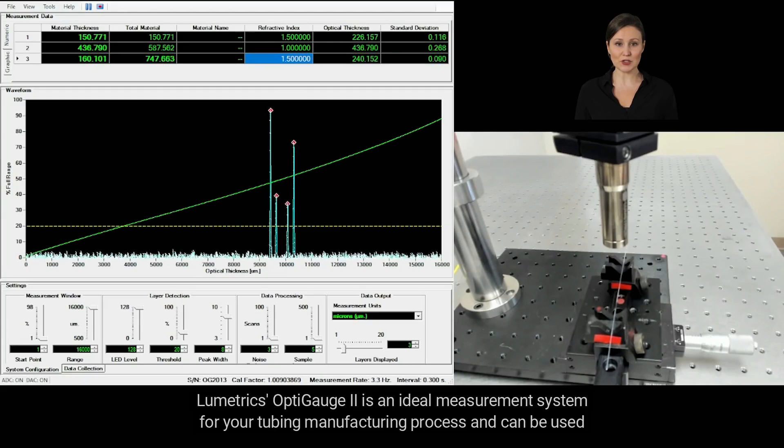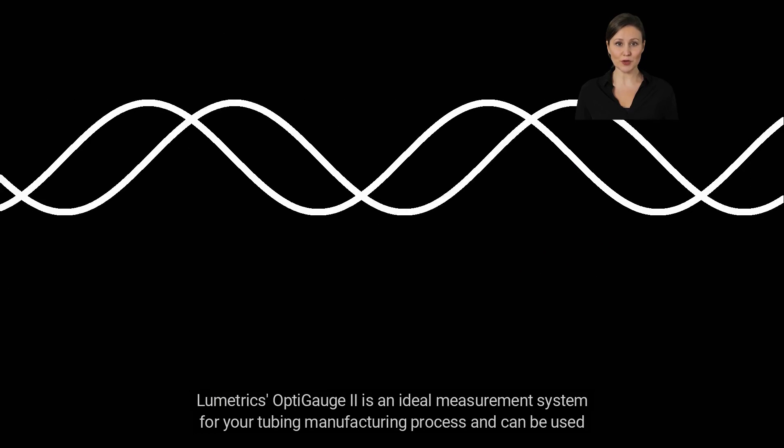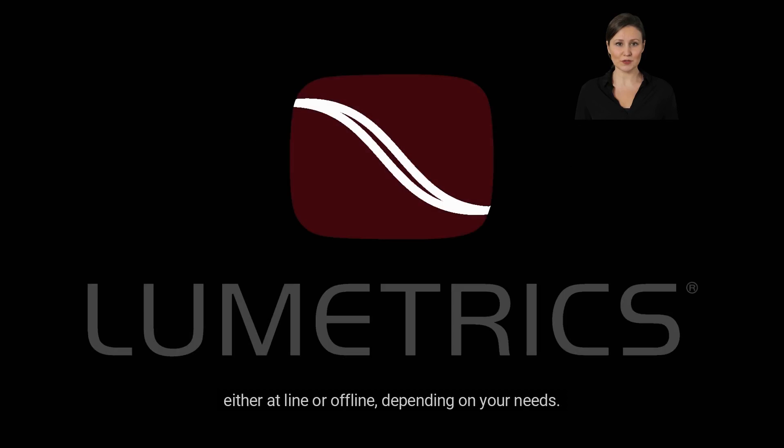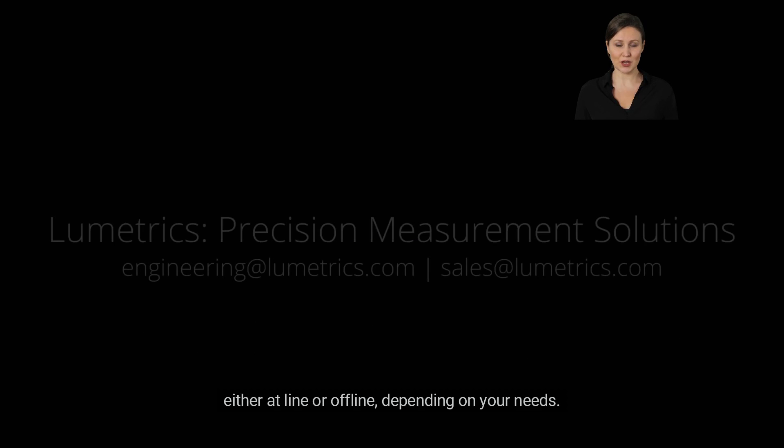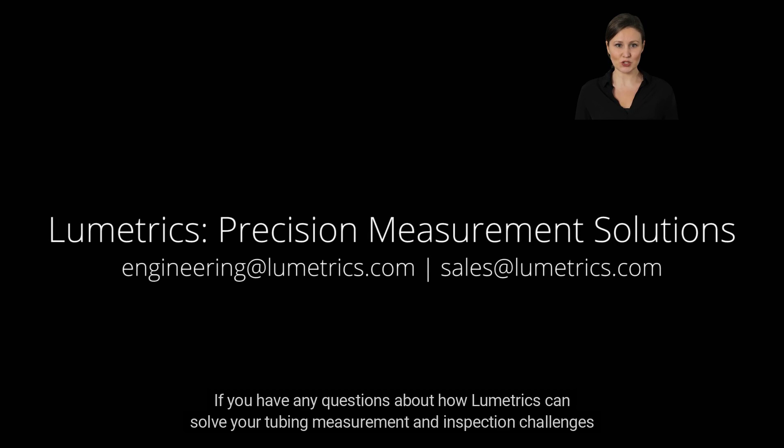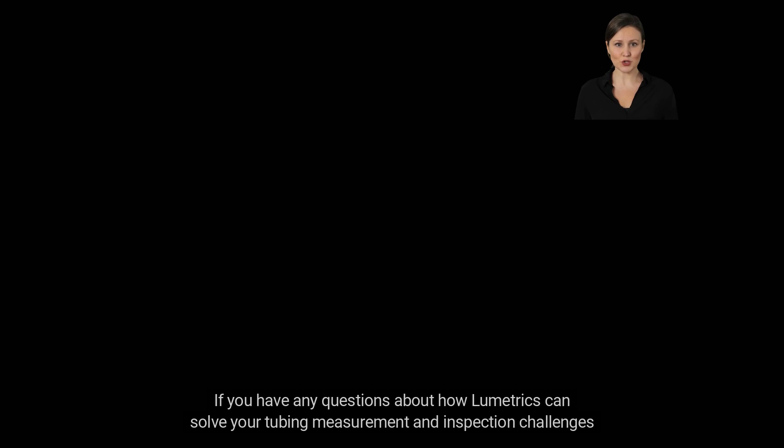Lumetrix OptiGage 2 is an ideal measurement system for your tubing manufacturing process and can be used either at line or offline, depending on your needs. If you have any questions about how Lumetrix can solve your tubing measurement and inspection challenges, please email sales at lumetrix.com or engineering at lumetrix.com.